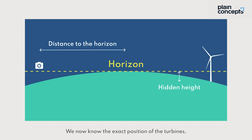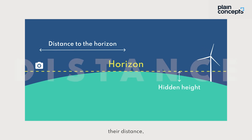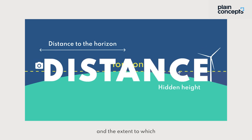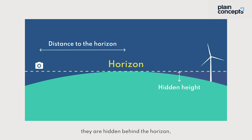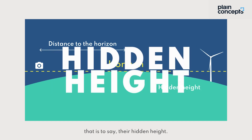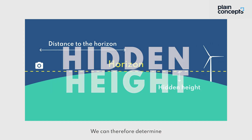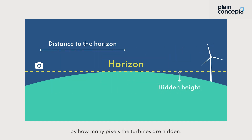We now know the exact position of the turbines, their distance, and the extent to which they are hidden behind the horizon — that is to say, their hidden height. We can therefore determine by how many pixels the turbines are hidden.